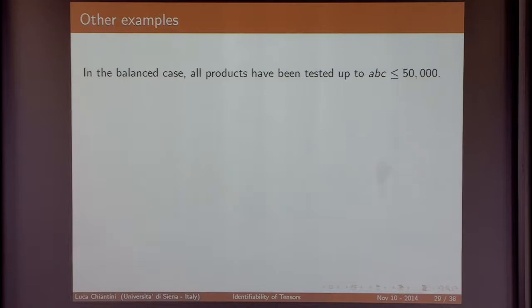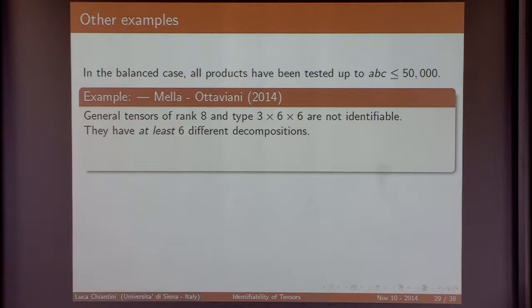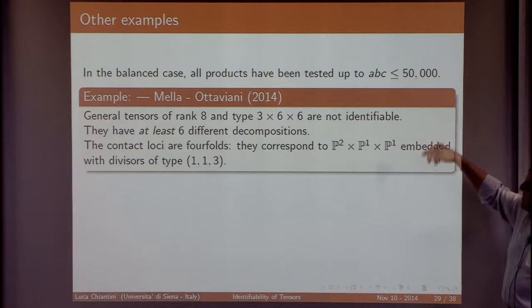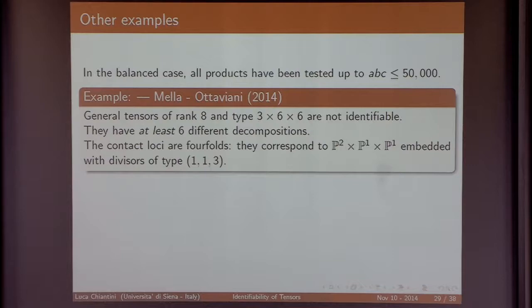Another non-identifiability example: rank-8 tensors of type 3×6×6 have exactly six different decompositions. The contact locus here is not an elliptic curve but a more complicated object — another Segre product embedded in the original Segre product by a strange divisor. You find this contact locus computationally for a specific case, then prove it in general. For the balanced case, we have a complete picture for products up to 50,000 or more, since computations can be performed by linear algebra via the so-called stack addition matrix.